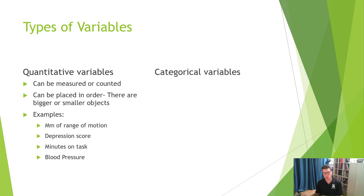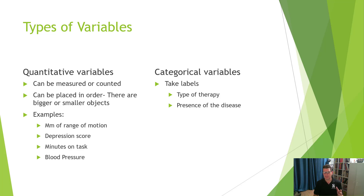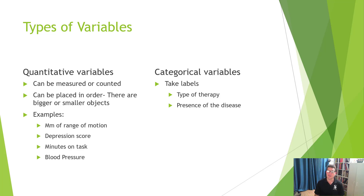On the other hand, a categorical variable is different — it takes labels, and we can't actually order categorical variables. For example, type of therapy: yoga therapy, skateboard therapy, no therapy. You might be tempted to rank them, but in actuality one is not bigger or better than another — they're just labels. Or presence of a disease: yes they have the disease, no they do not. Yes and no answers collected as data are examples of categorical variables.